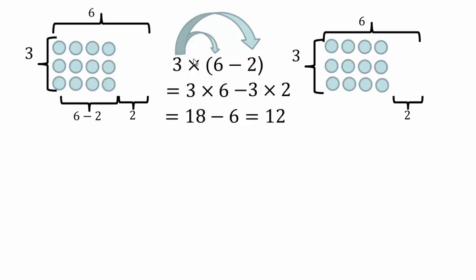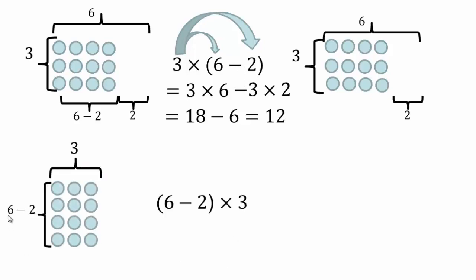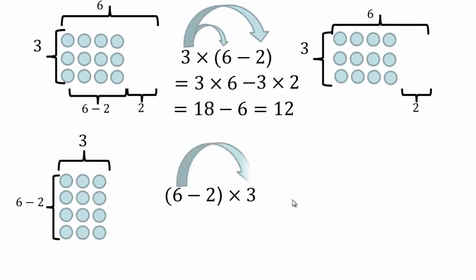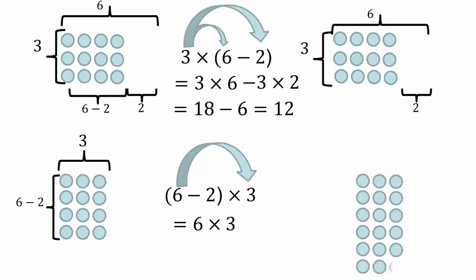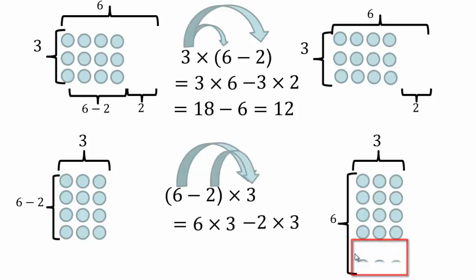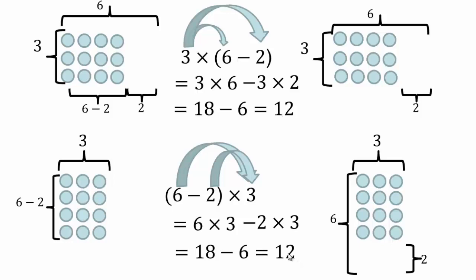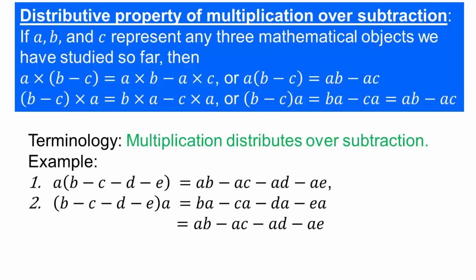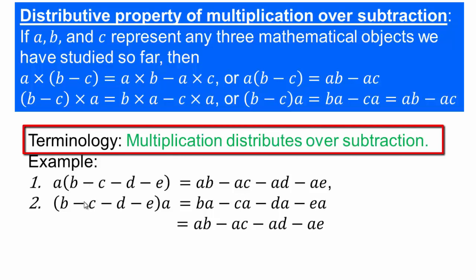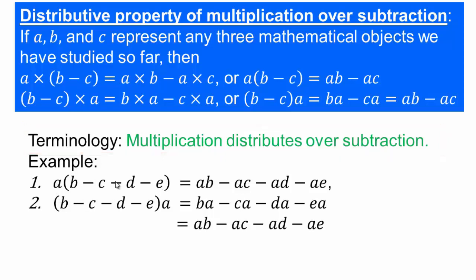Multiplication distributes over subtraction, and also over addition. For example, (6 minus 2) times 3 is 4 rows of 3; or you can do 6 times 3 minus 2 times 3, which is 18 minus 6, also 12. So the distributive property is: a times (b minus c) equals ab minus ac. This works in the other direction as well because of the commutative property of multiplication. Whether you have 2, 3, or 4 terms, it does not matter — you multiply each term, term by term.